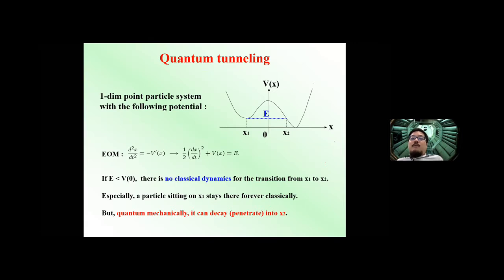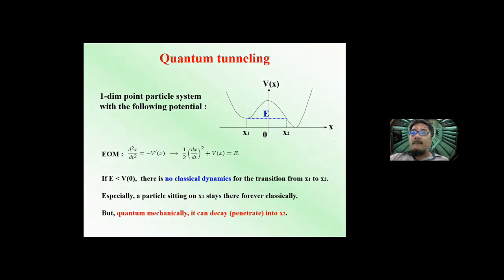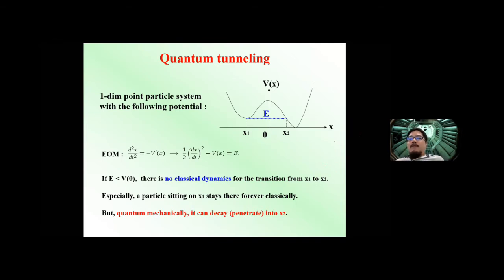Let's start by considering a simple one-dimensional point particle system with a simple potential. The point x1 is completely stable at the classical level. As long as the total energy is lower than the potential barrier B0, we don't have any classical dynamics representing a transition from x1 to x2, because we cannot overcome the potential barrier. A particle sitting at x1 stays there forever classically, but quantum mechanically it can decay or penetrate into x2.